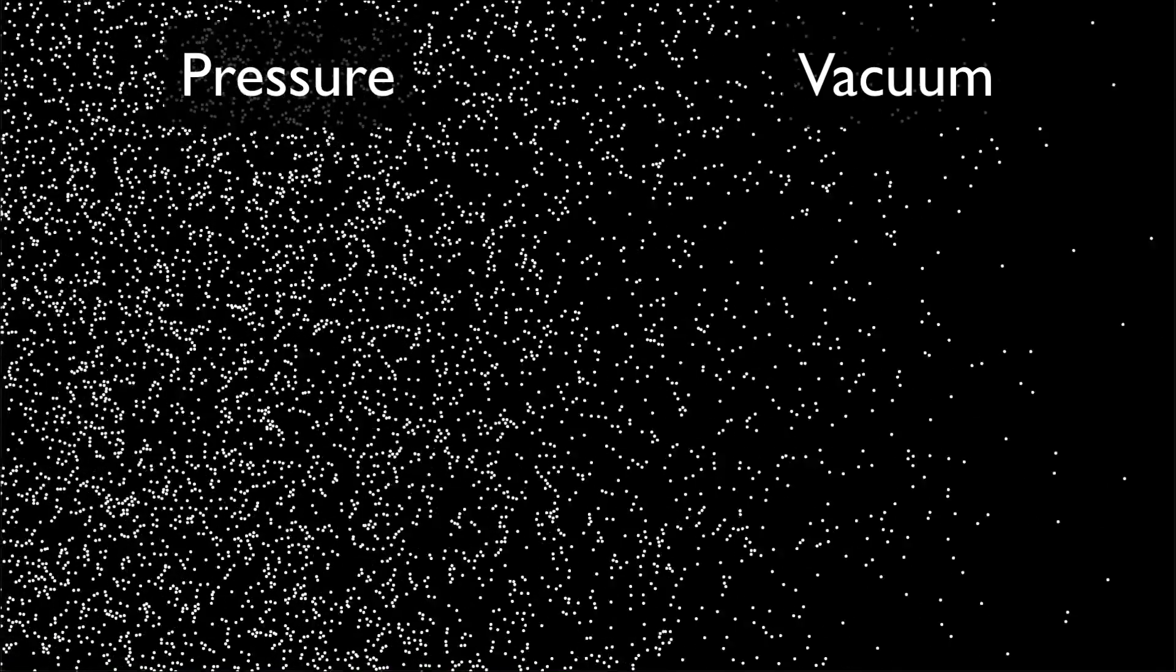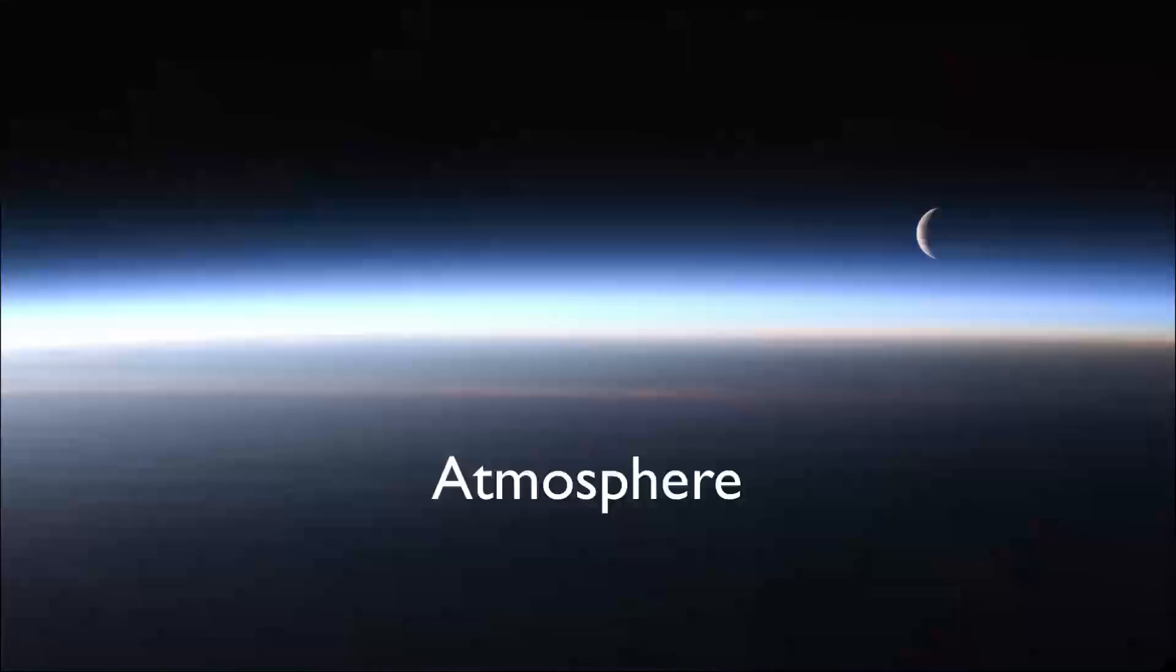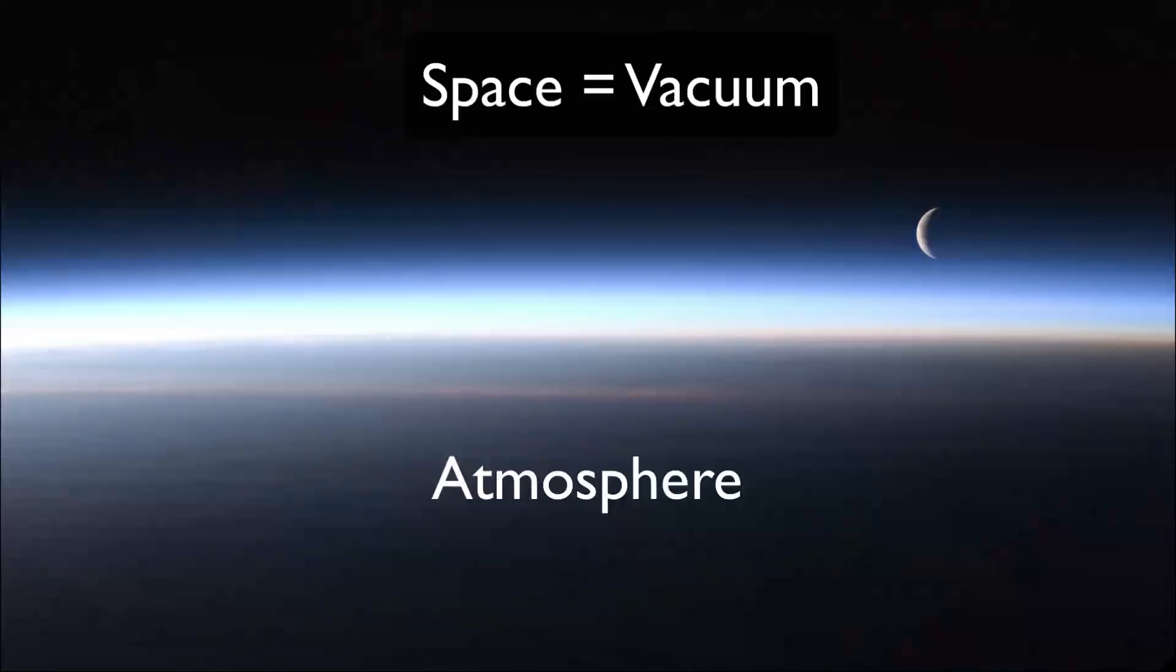So we all know if you've got some air under normal pressure and there's a vacuum next to it, then the air will rush over to fill the vacuum. But the Earth's atmosphere is under normal pressure, and there's nothing between the atmosphere and the vacuum of space, so why doesn't all the air on Earth get sucked into space?